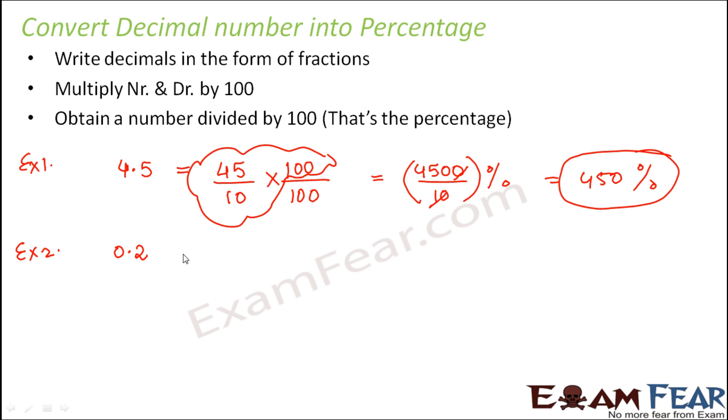Let us say 0.2. So 0.2, first we write it as fraction: 2 divided by 10. Now here again we multiply the numerator and denominator by 100. So this becomes 2 times 100 divided by 10 times 100 percent. So this 10 into 10 is 100, so this is equal to 20%.